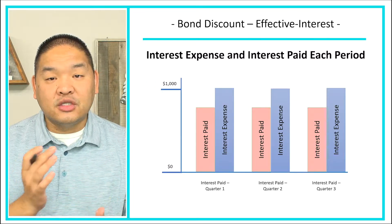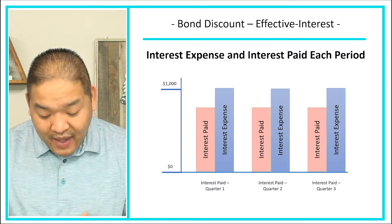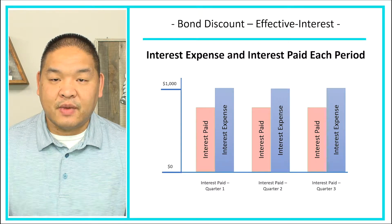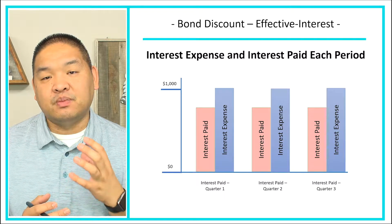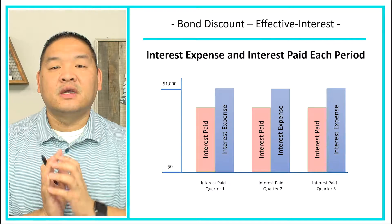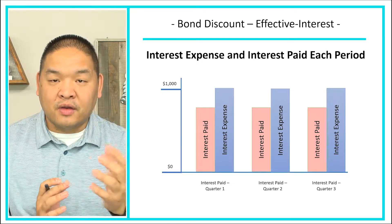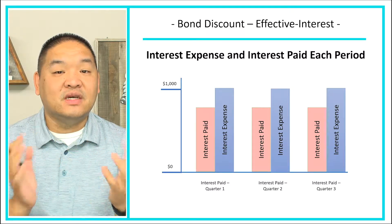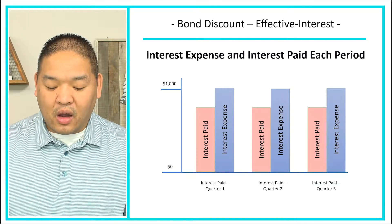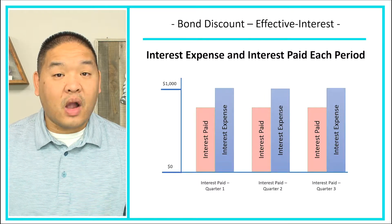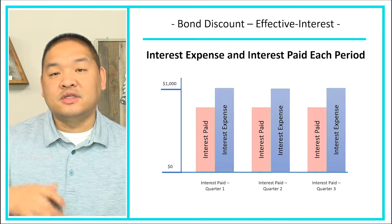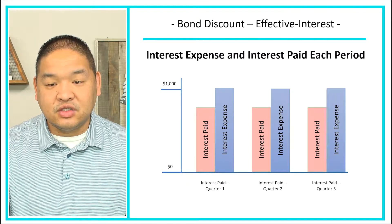Mechanically, the interest that we are going to pay is going to be less than our interest expense, because we are borrowing at the beginning what seems like less than what the bonds are actually worth. We're going to have to deal with that by adding interest expense into our problem so that we can get our bond to go from $98,000 up to $100,000.